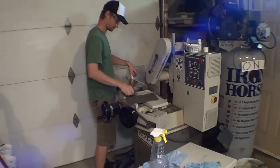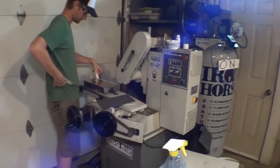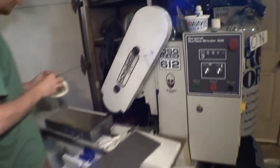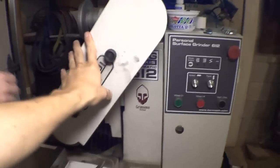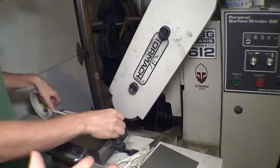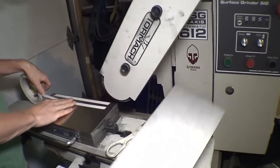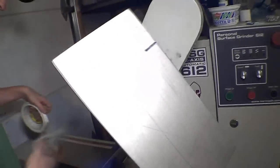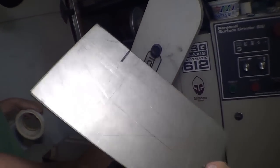All right, this morning we're going to be working on the Tormach 612 PSG surface grinder. Here we have the belt attachment which runs 1 by 42 belts. The awesome thing about the belt attachment is now we can surface grind titanium, can't do that so well with the stones, at least as far as I know.